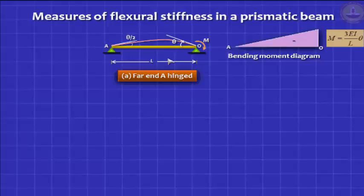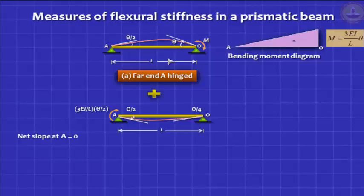Now we want to extend this to a situation where the end A is fixed against rotation. To do that, we will take advantage of this analysis. And now we apply a moment at A deliberately to cancel out the rotation theta by 2, which means we now have to apply a clockwise rotation. So we have to apply a clockwise moment.